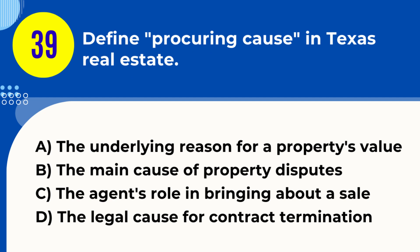Question 39. Define procuring cause in Texas real estate. A. The underlying reason for a property's value. B. The main cause of property disputes. C. The agent's role in bringing about the sale. D. The legal cause for contract termination. Answer: C. The agent's role in bringing about the sale. Explanation: In Texas real estate, procuring cause refers to the actions of an agent that directly lead to the successful sale or purchase of a property.